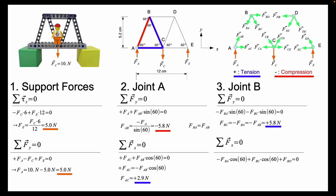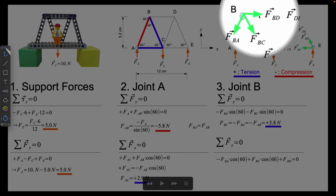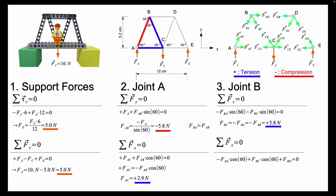So next I do the sum of all forces in X. So I get minus the force BA cosine 60 plus the force BC cosine 60 and then plus the force BD here in the top.